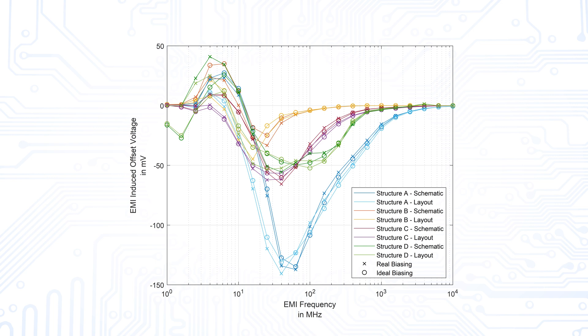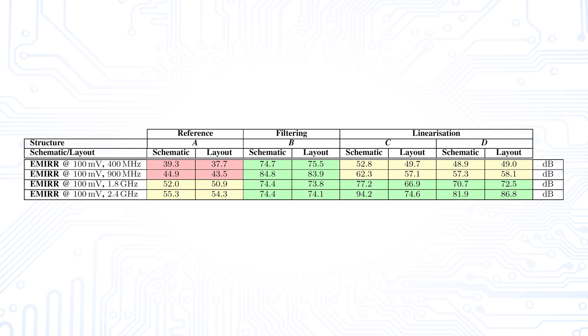You can see that the schematic and layout back-extracted versions behave similarly. The difference in EMI-induced offset voltage between schematic and layout back-extracted level is quite low, with only a small shift in frequency when the highest EMI-induced offset is reached. Furthermore, there are only minor differences between real and ideal biasing. All together, the filtering structure shows the best results for this analysis. The changing sign of the EMI-induced offset voltages can be explained by a phase shift of 180 degrees at the amplifier input stage drain terminals. This sign change occurs for frequencies higher than the second pole, which lies at about 5.5 MHz. For better comparability, we calculated the EMI rejection ratio for an amplitude of 100 millivolts at common frequencies used by communication applications. Again, structure B performs best, whereas structure A performs worst.